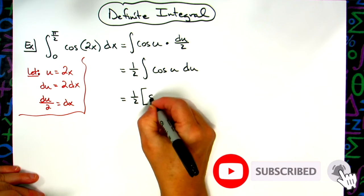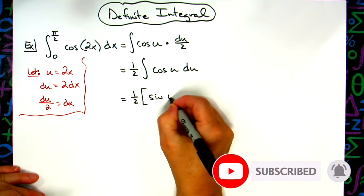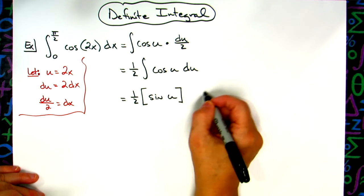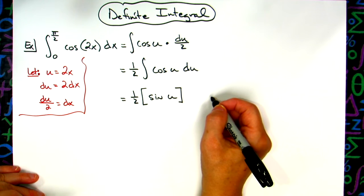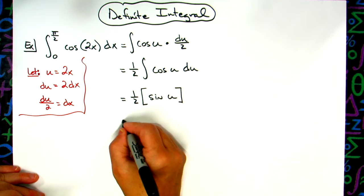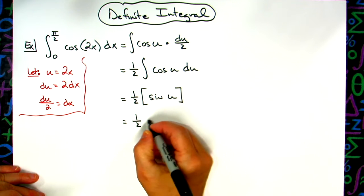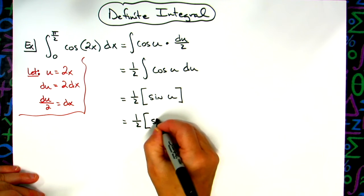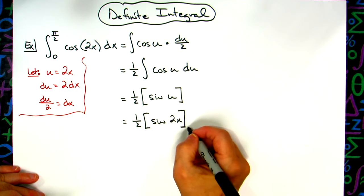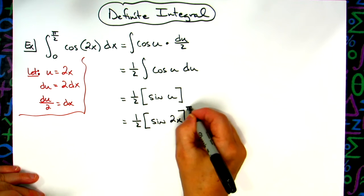At this point, I still have a u. I don't necessarily need to put that plus c on there because what I'm going to do in my next steps is replace u with my 2x. So now I'm down to one-half times sine of 2x. I am now back in terms of x, so now I can add the zero and then the pi over 2, because I now have an equation in terms of x.